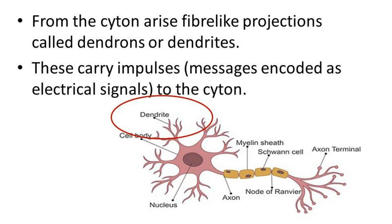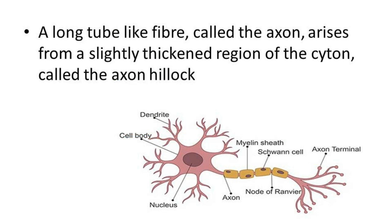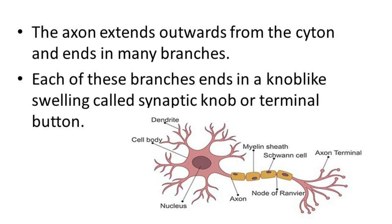The dendrites carry impulses encoded as electrical signals to the cytone. Then there is a long tube-like fiber called the axon. The axon is the tail-like structure in the center. It arises from a slightly thickened region of the cytone called the axon hillock. The axon extends outward from the cytone and ends in many branches.